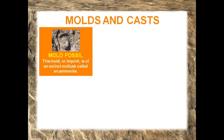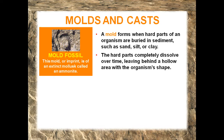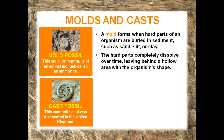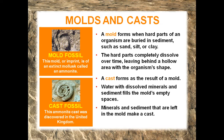Molds and casts: a mold, or imprint, is of an extinct mollusk called an ammonite. A mold forms when hard parts of an organism are buried in sediment such as sand, silt, or clay. The hard parts completely dissolve over time, leaving behind a hollow area with the organism's shape. A cast forms as a result of a mold — water with dissolved minerals and sediments fill the mold's empty spaces, and the minerals left in the mold make a cast. A cast is the opposite of its mold.